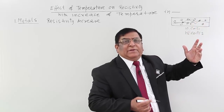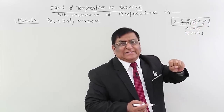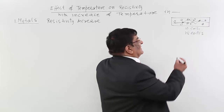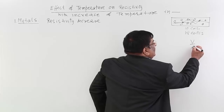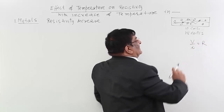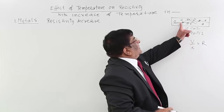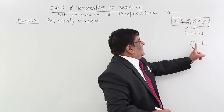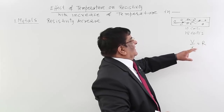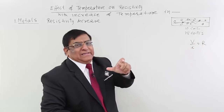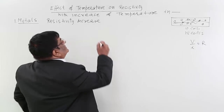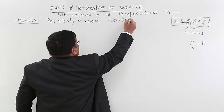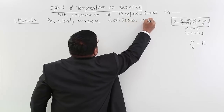So if the number of collisions has increased, every time the electron has to stop, again start velocity from zero, stop, again start velocity from zero — so its velocity does not build up. If velocity does not build up, drift velocity decreases, then current will also decrease. And if the current decreases, then V upon I, that is resistance, will increase. So resistance increases with temperature because collisions increase.